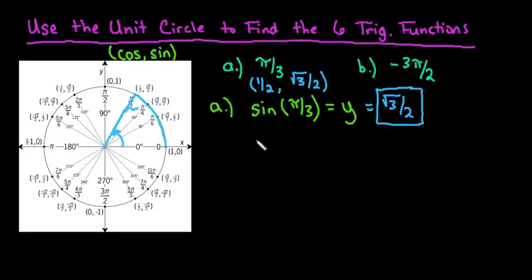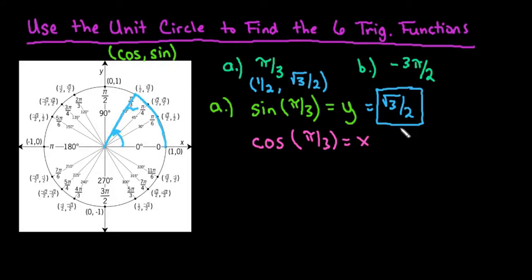The next one is cosine. Cosine of pi over 3 equals the x-coordinate. Looking at the x-coordinate, we just have 1/2.